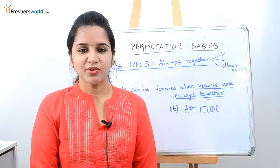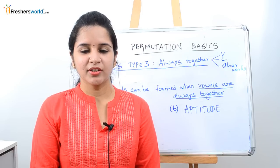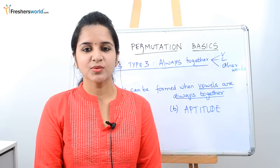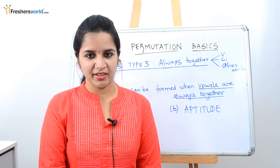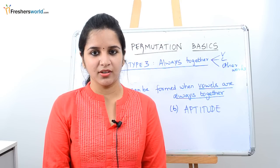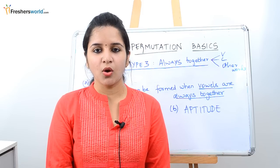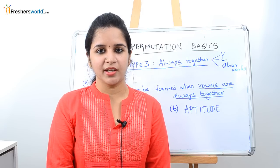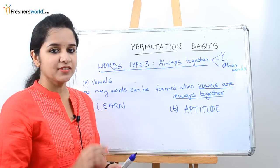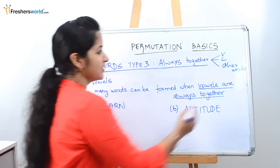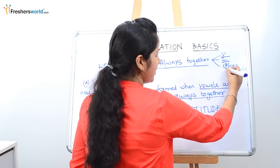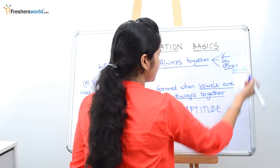In last videos, we discussed two types of problems: one is with numbers, another is with repeated letters and non-repeated letters, and repetition allowed and not allowed. Today, we are going to deal with the always together type of problem. In always together problems, we have three types: vowels always together, consonants together, and other words together.